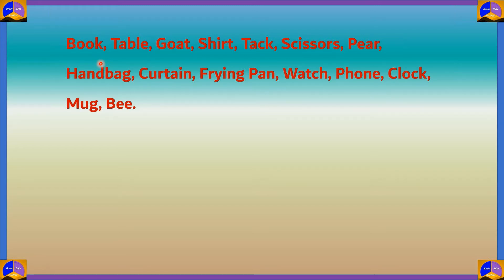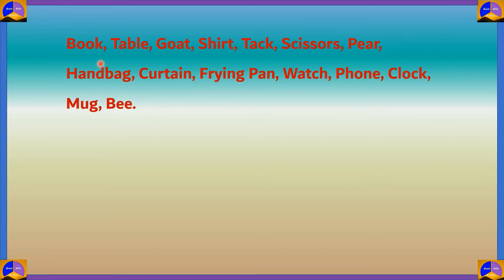Now you need to associate book to table, and that should be as illogical as possible. For example, you can imagine yourself eating out of a large book instead of a table, or you can see yourself reading a table and folding it like a book. These are the kinds of illogical images we use — we see them in our mind's eye for just a few seconds, and that's it. It'll be set in your memory.